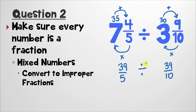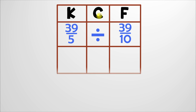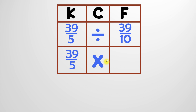Let's rewrite this nice and big. Now that we have two fractions, we need to put everything in a KCF chart. Remember that the K stands for keep, so thirty-nine over five is going to stay exactly the same. C stands for change, which means our division will become multiplication. And finally, the F stands for flip, which means we're going to take this fraction and flip it around. So instead of thirty-nine over ten, we'll have ten over thirty-nine.